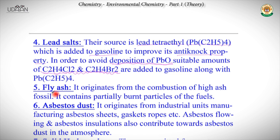Next type of particulate matter is fly ash. Fly ash basically originates from combustion of high ash fuels like newspapers. It contains partially burnt particles of fuels that are burnt in absence of oxygen. It is important to remember that these are partially burnt particles of fuels, and fly ash originates from combustion of high ash fuels.